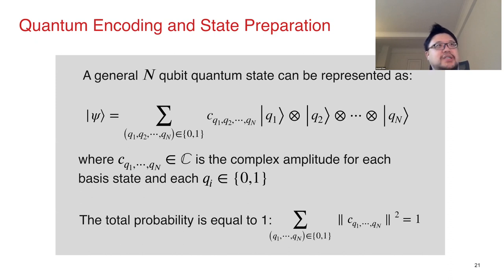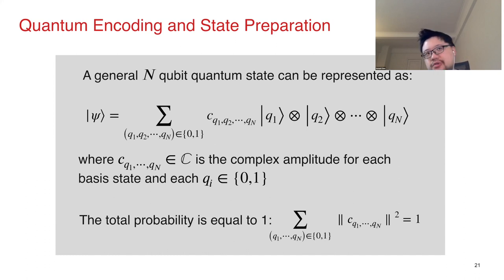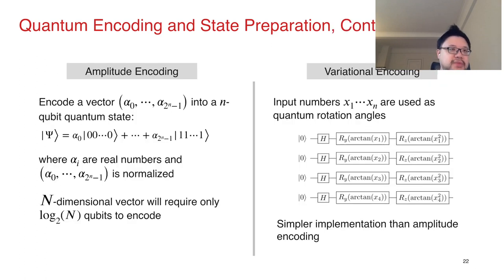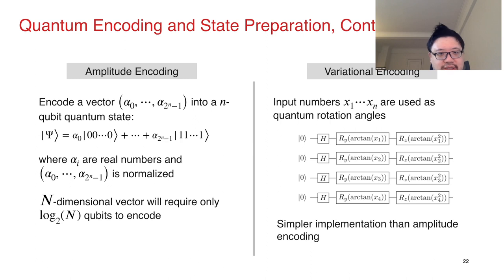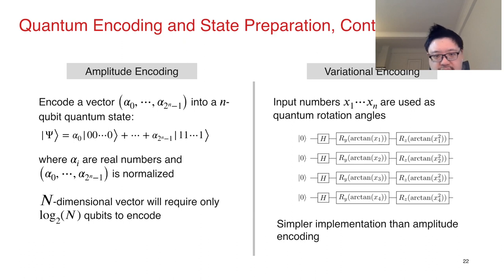The quantum encoding step is important. A general n-qubit state can be represented as a superposition, and encoding is the procedure that transforms your input data into the complex amplitudes of each computational basis state. There are different kinds of encoding methods, each with strengths and weaknesses. For example, amplitude encoding can theoretically compress an n-dimensional vector into log(n) qubits, but it is generally harder to implement on real hardware. Variational encoding is much simpler — you use your original input x1 to xn directly as quantum rotation angles.